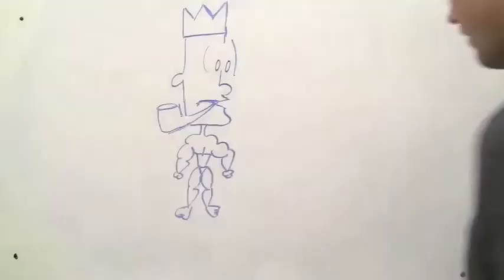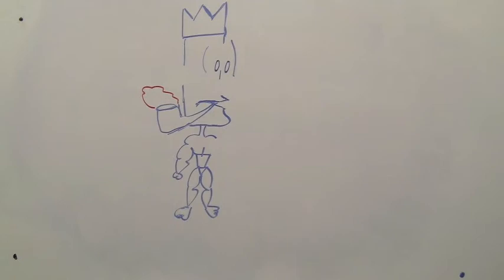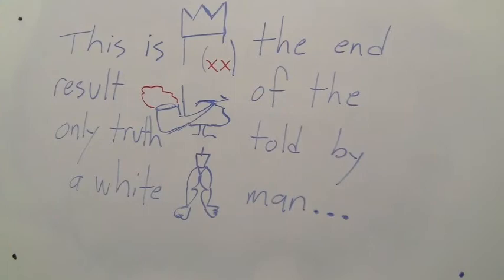Oronoko only asked for a pipe as he was being executed, and didn't make a sound as they cut off his ear, his nose, and his arm. We can only imagine what he was thinking. Tis but a scratch. A scratch? Your arm's off. No, it isn't. Well, what's that then? I've had worse. You liar. Come on, you pansy, I'll bite your leg off. Unfortunately, Oronoko succumbed to his wounds and died. Here we see the end result of the only truth told by a white man, who apparently have no real sense nor reason.